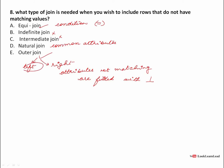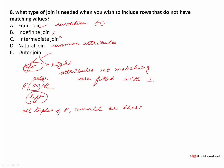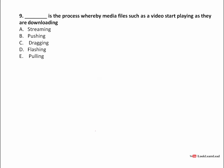In a left outer join, when joining R1 and R2, all the tuples of R1 would be there. For a right outer join, all tuples of R2 would be there. Non-matching values are filled with null. So the answer is outer join.